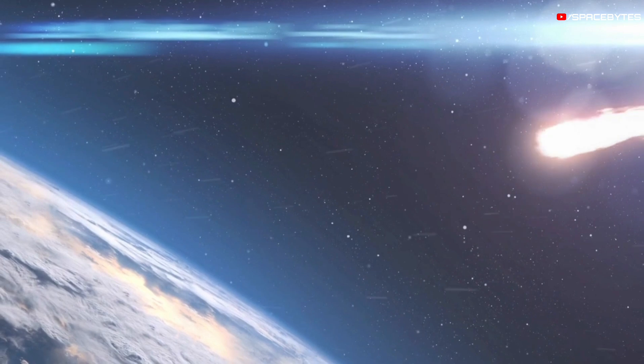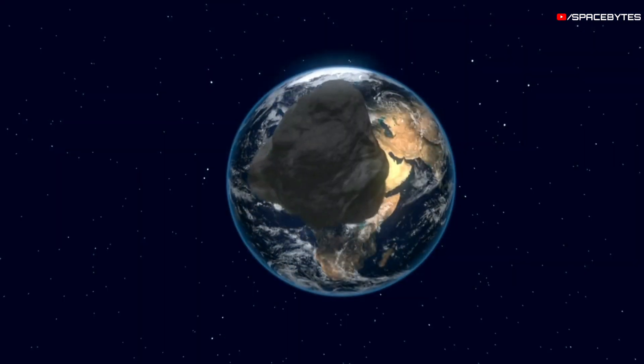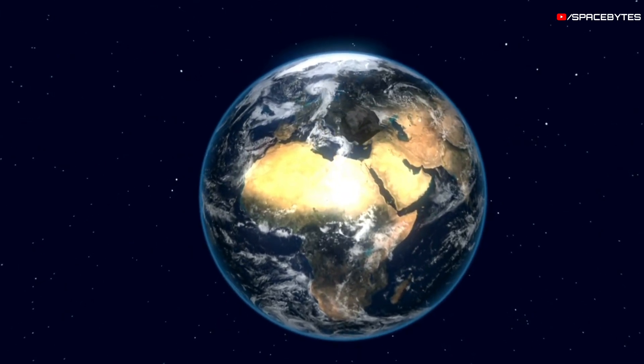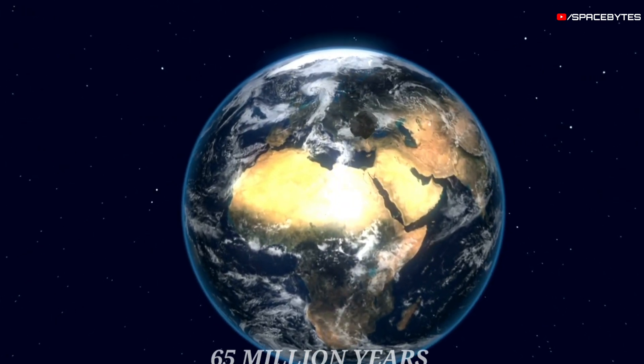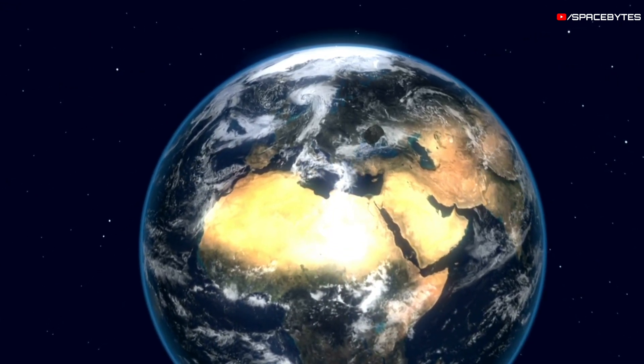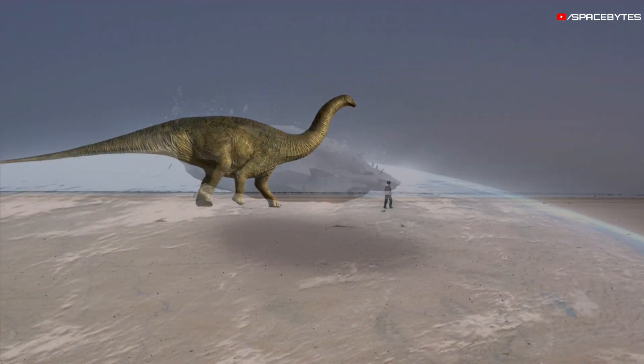The Chicxulub event is one of the deadliest in our planet's history. This asteroid, measuring around 10 kilometers in diameter, collided with Earth some 65 million years ago in what is now Mexico. The impact wiped out 70% of all life on Earth, including the dinosaurs.